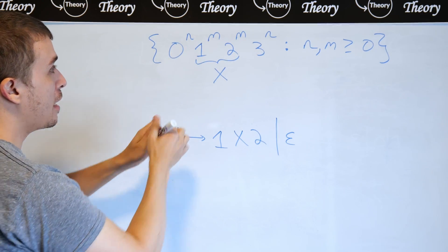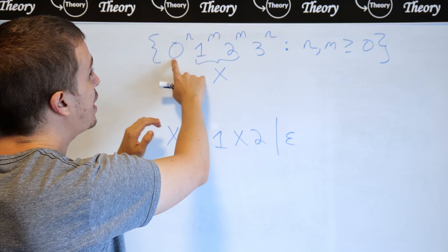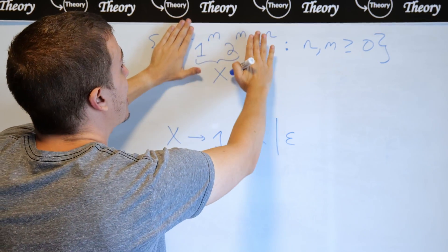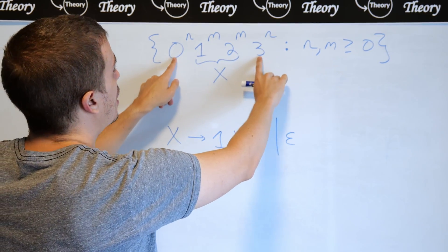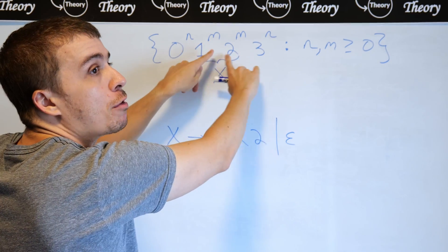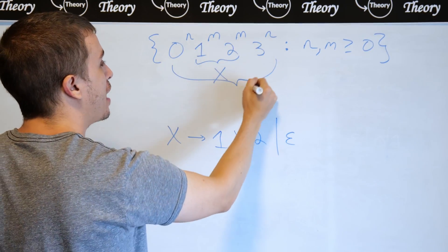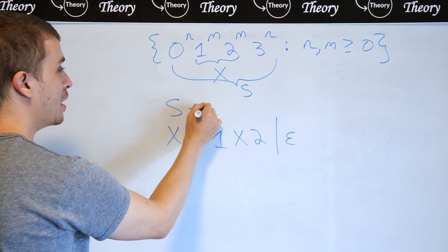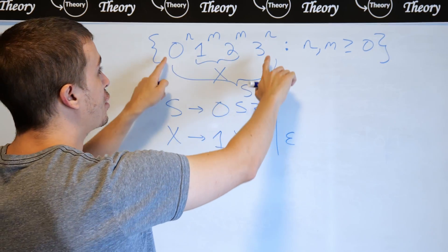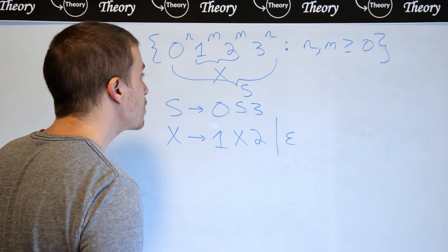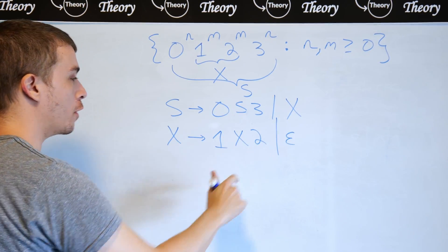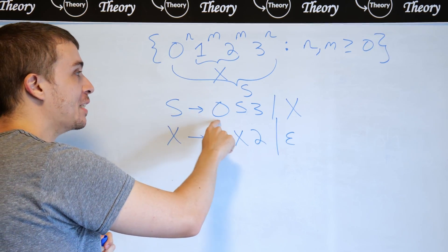How do we build this up? It's the same idea but with zero on the front and three on the end. The difference is that whatever X makes is on the inside and completely separate. Whenever the grammar decides to start working on the ones and twos, we need to stop making zeros and threes. So I have a variable S making the whole thing: S produces 0S3, making a zero on the front and three on the end, working our way in. Eventually we switch to X to make the ones and twos, with no way to go back. S is the start variable.